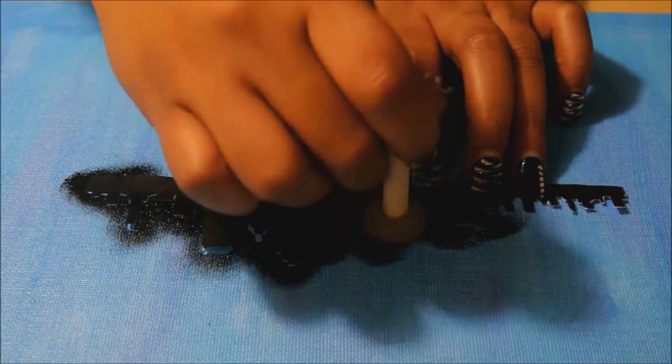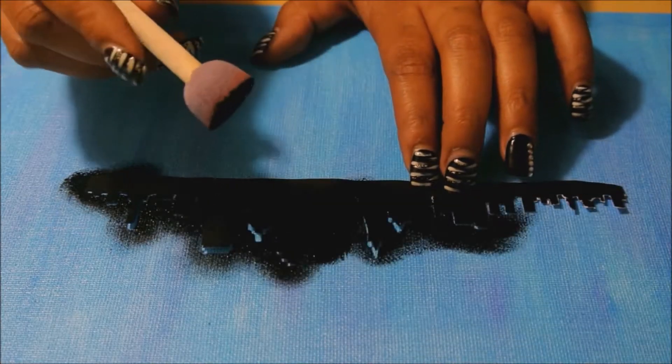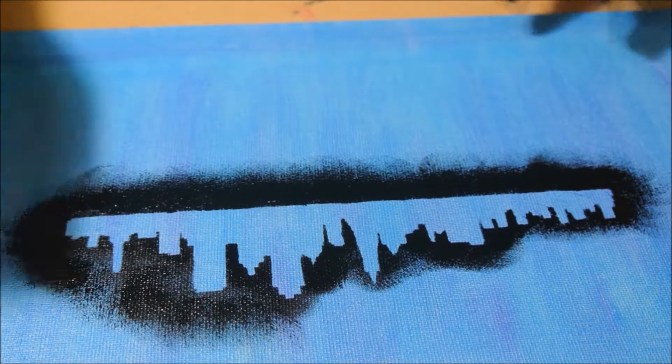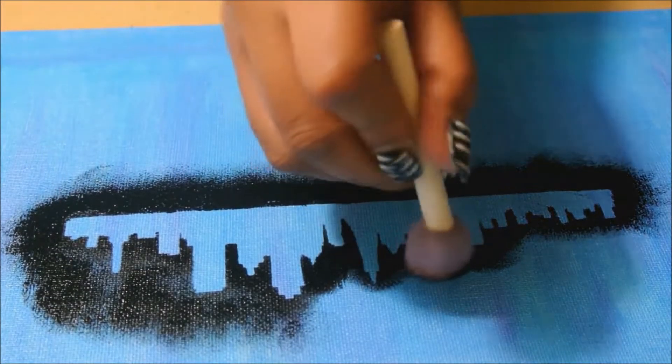I did the same thing with both stencils. I continued doing the pouncing technique until I was satisfied with the size of the black fading effect around the stencil.